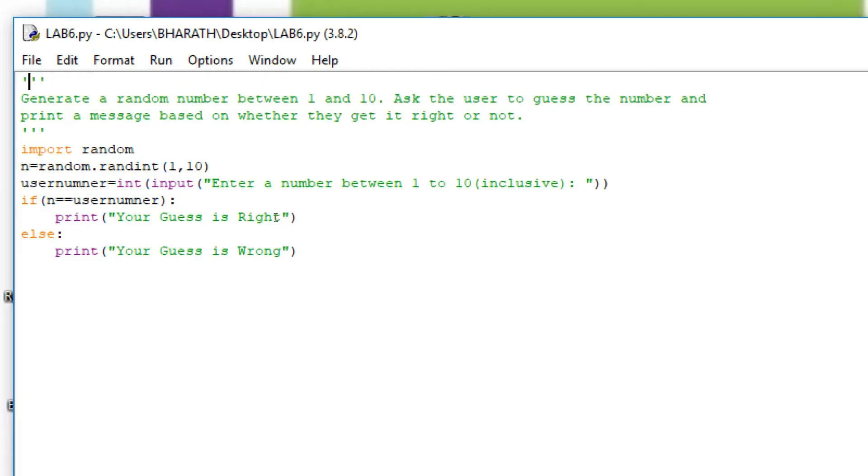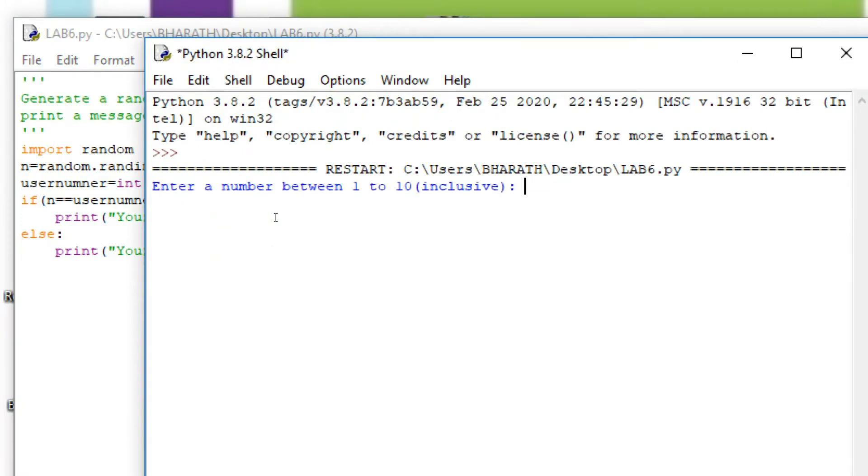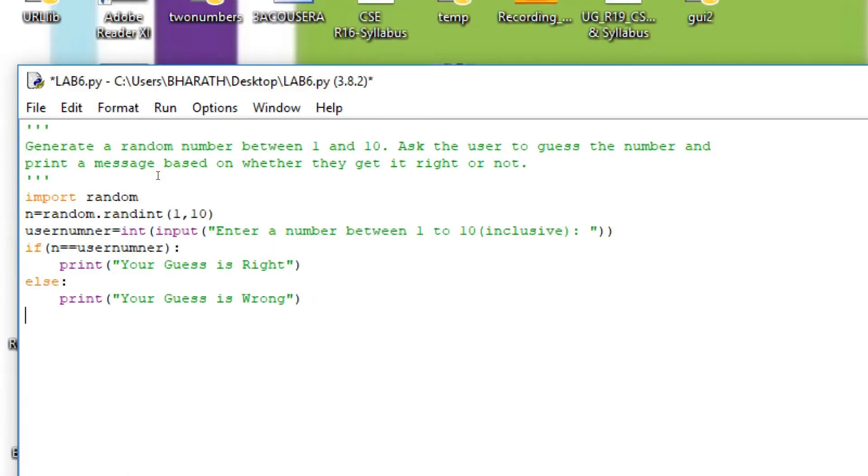Now we see the execution of the program. Enter a number between 1 to 10. I enter 4. Your guess is wrong. We see the random number.